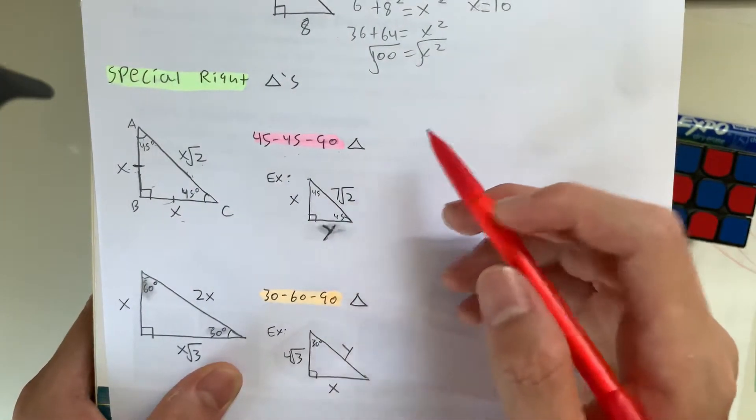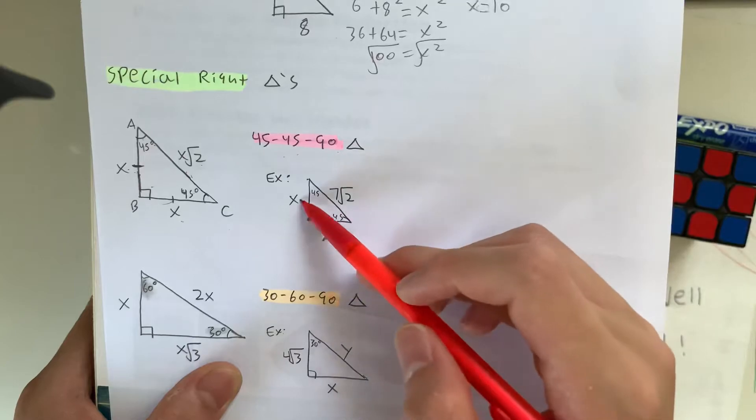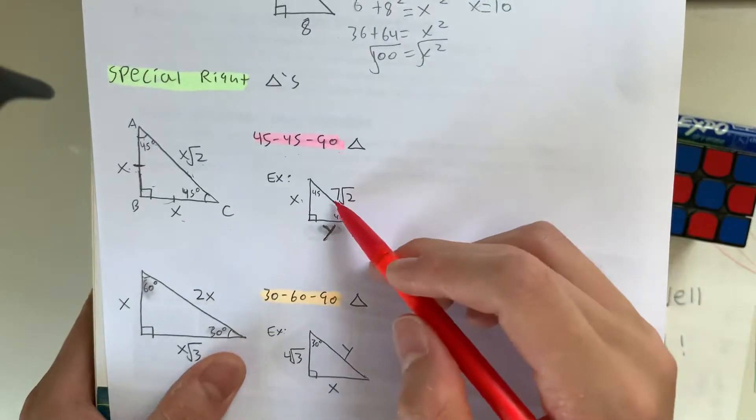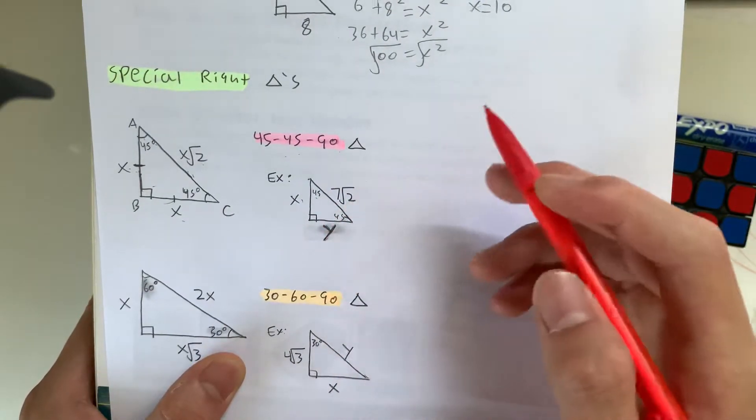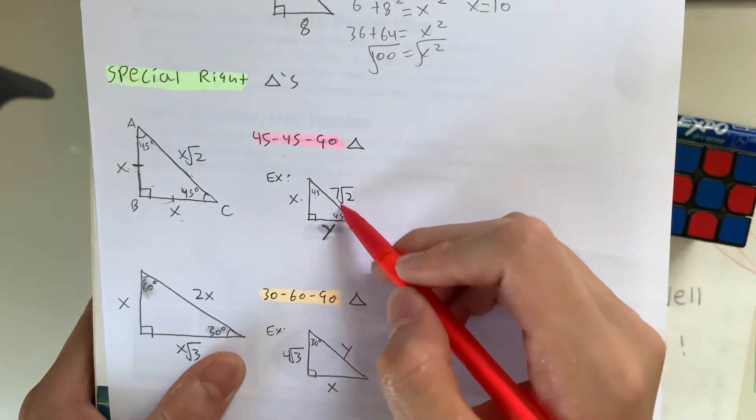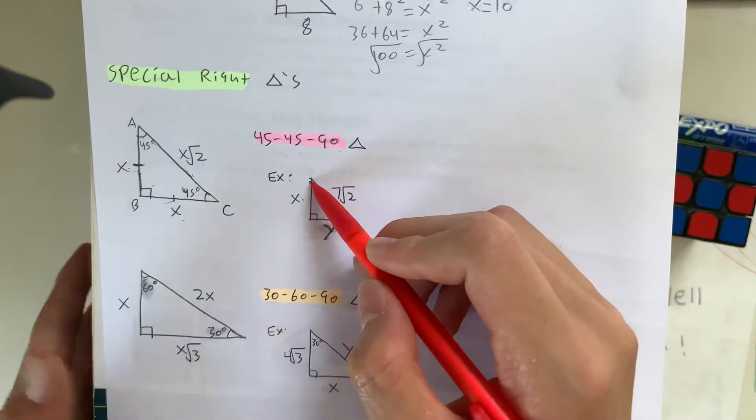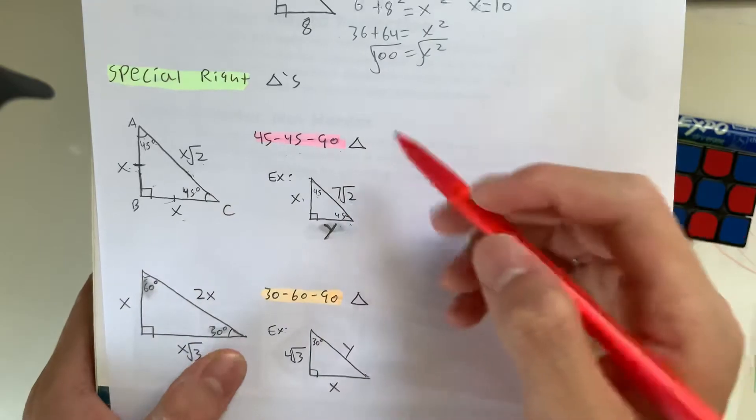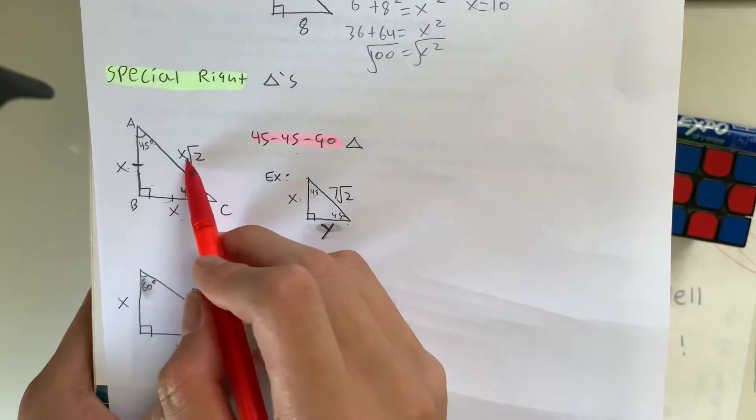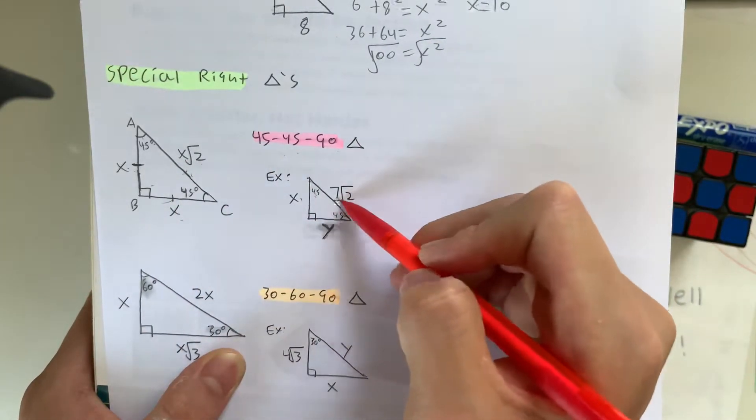So let's look at this example right here. So you're asked to find the lengths of x and y. And given that it's a 45-45-90 triangle, and you're given the hypotenuse of the triangle being 7 times root 2. So as you guys know here, you just plug in the value. So this is x, right?